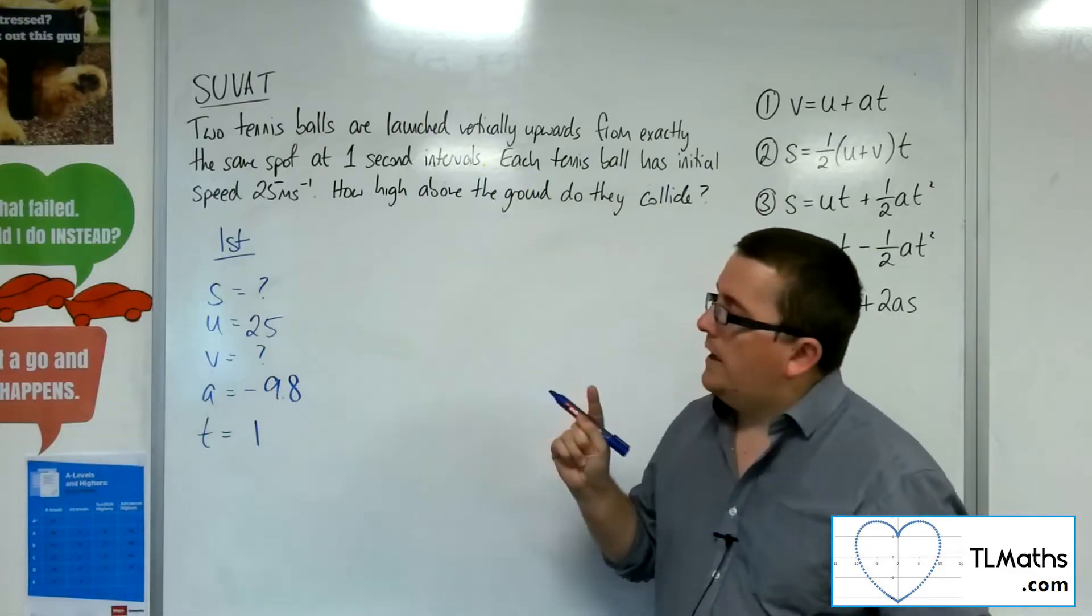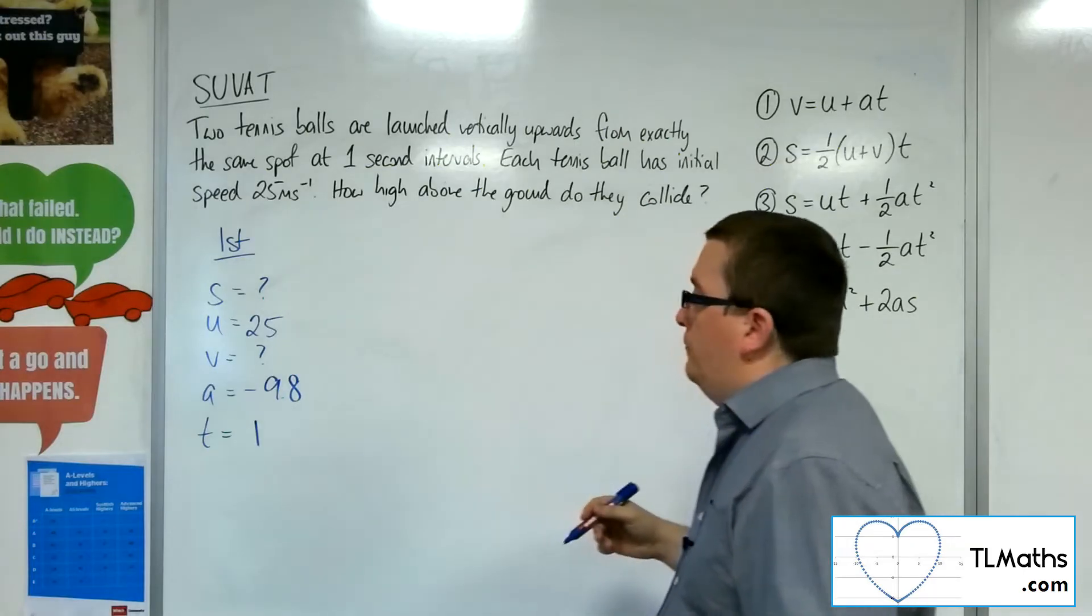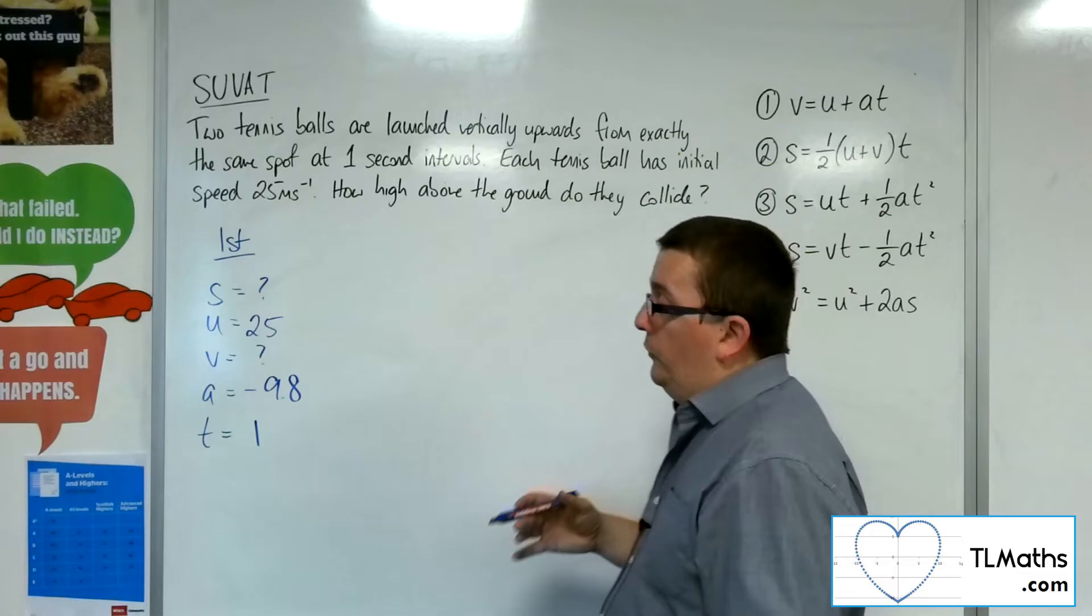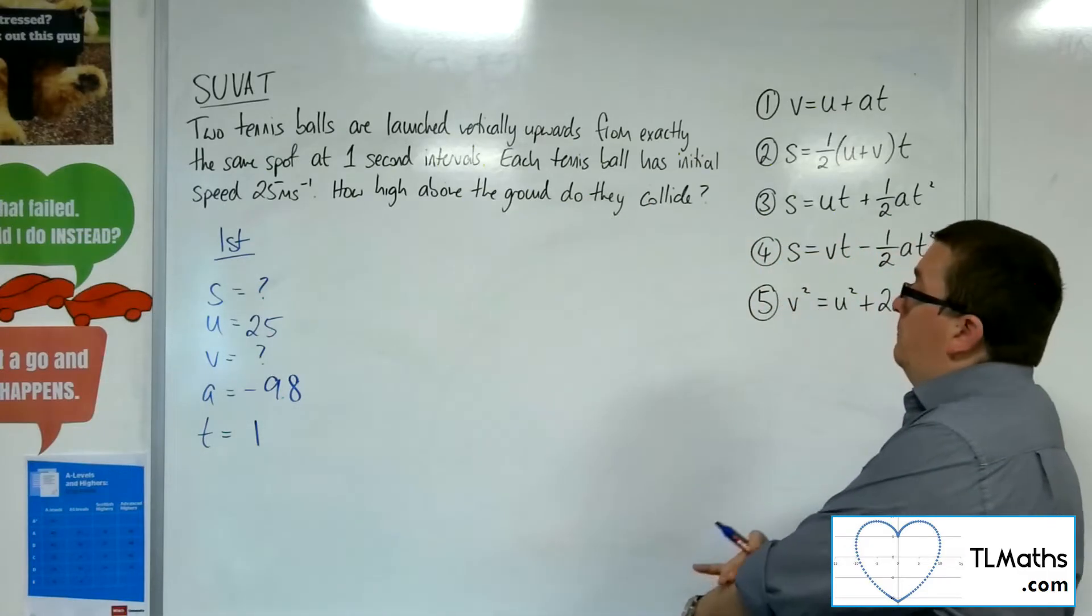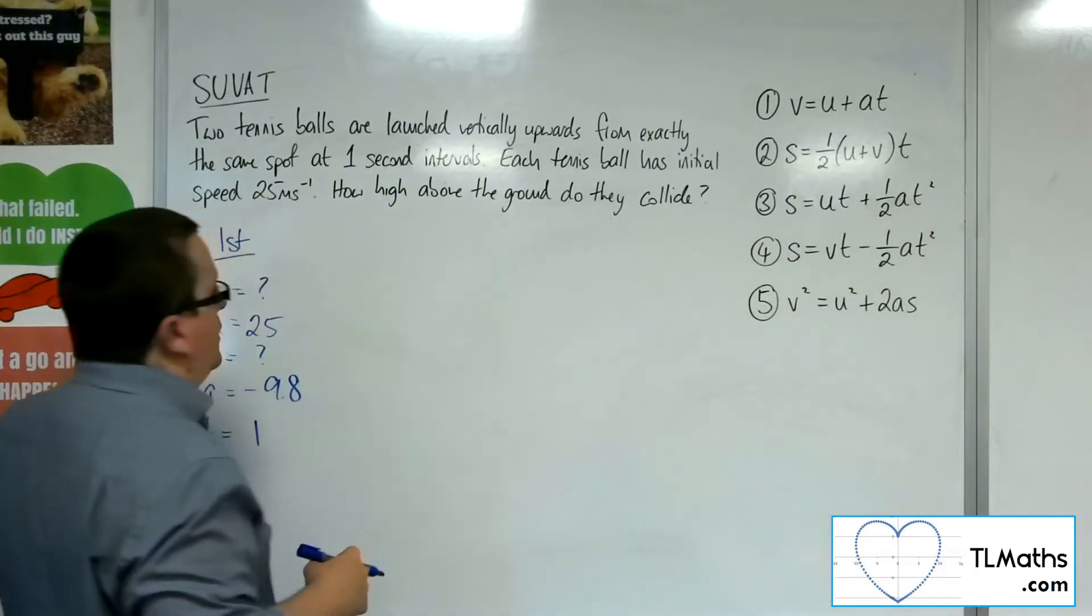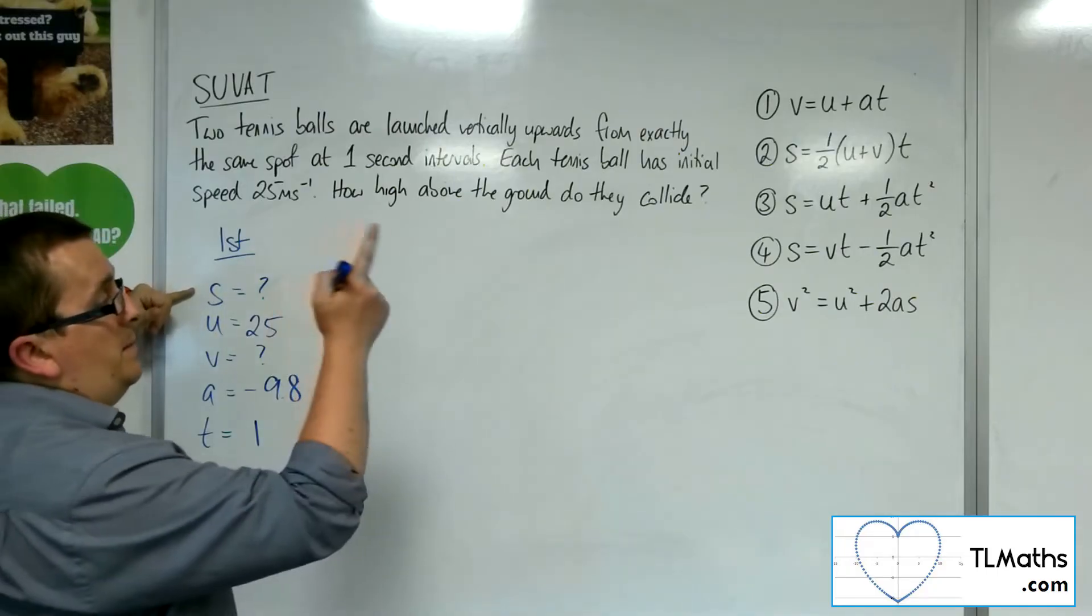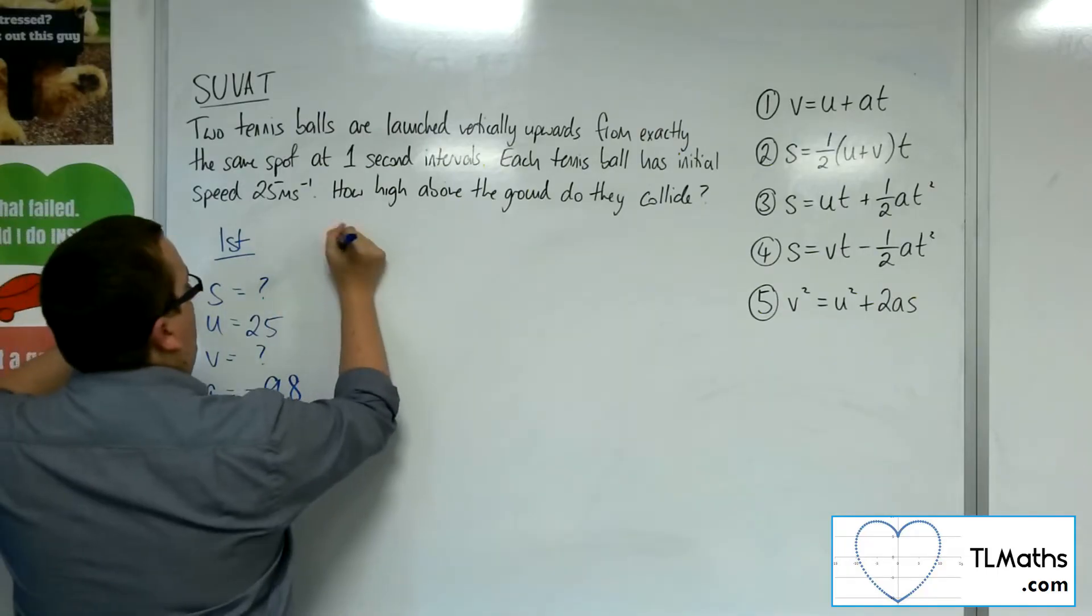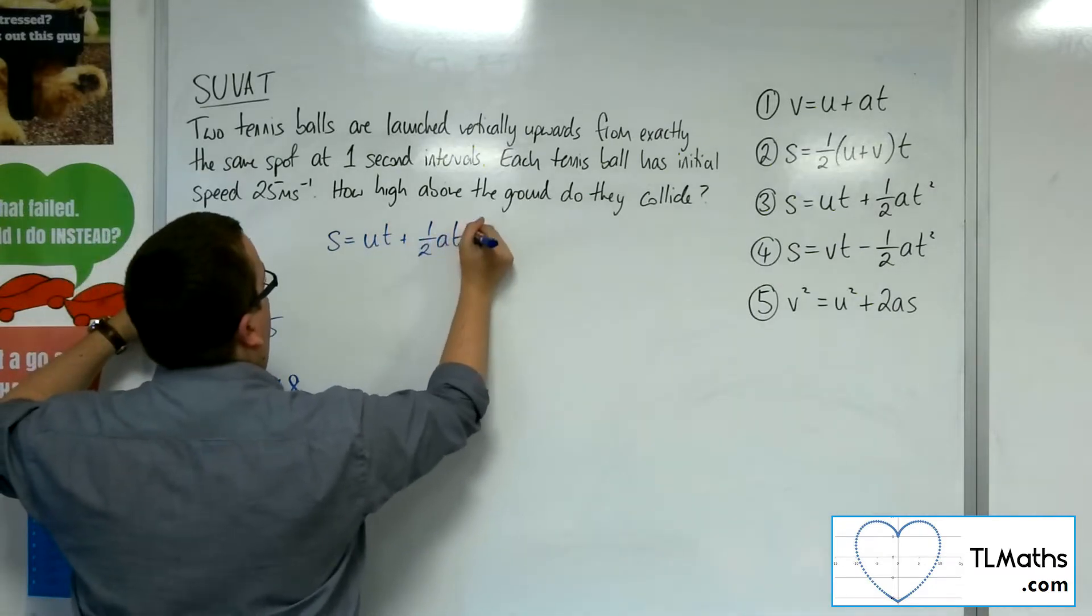So my target here is to work out that displacement. It would also be useful to find out the velocity that it's travelling. So an equation that doesn't have the velocity that finds me the displacement is number 3. So s equals ut plus half at squared.